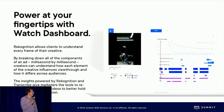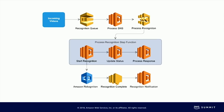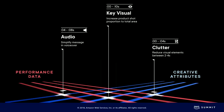As that data funnels into our data pipeline, we have API integrations with all the major social platforms. We intersect that creative attribute data with performance data to paint a picture for creators and clients about which elements in their creative are driving performance. We're looking at KPIs between view-through rates and the KPIs that drive engagement for their brand or product and marketing campaign.